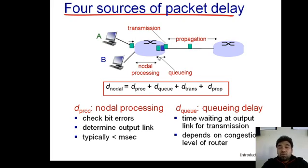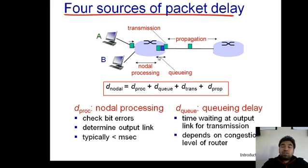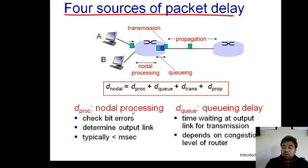For queuing delay, transmission delay, and propagation delay there are formulas, but processing delay has no specific formula. This end-to-end delay, also called nodal delay or latency, formed from these four delay types, is very important from an examination standpoint — most GATE questions are based on this formula. We will discuss these delays using an analogy in the next lecture. Thank you very much, see you in the next lecture.